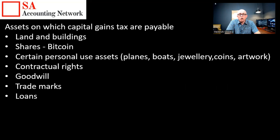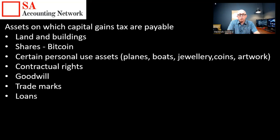Assets on which capital gains tax is payable include land and buildings — any property you sell gets registered with the receiver of revenue, so if you sell a building and don't declare it, they will pick it up. Shares are next — every time you buy or sell shares, there's a possibility of paying tax, depending on whether the sale is revenue or capital in nature. Certain personal use assets are taxable: planes over 450 kilograms, boats longer than 10 meters, certain jewelry, coins, and artworks. Contractual rights, goodwill, trademarks, and loans are also on the list.